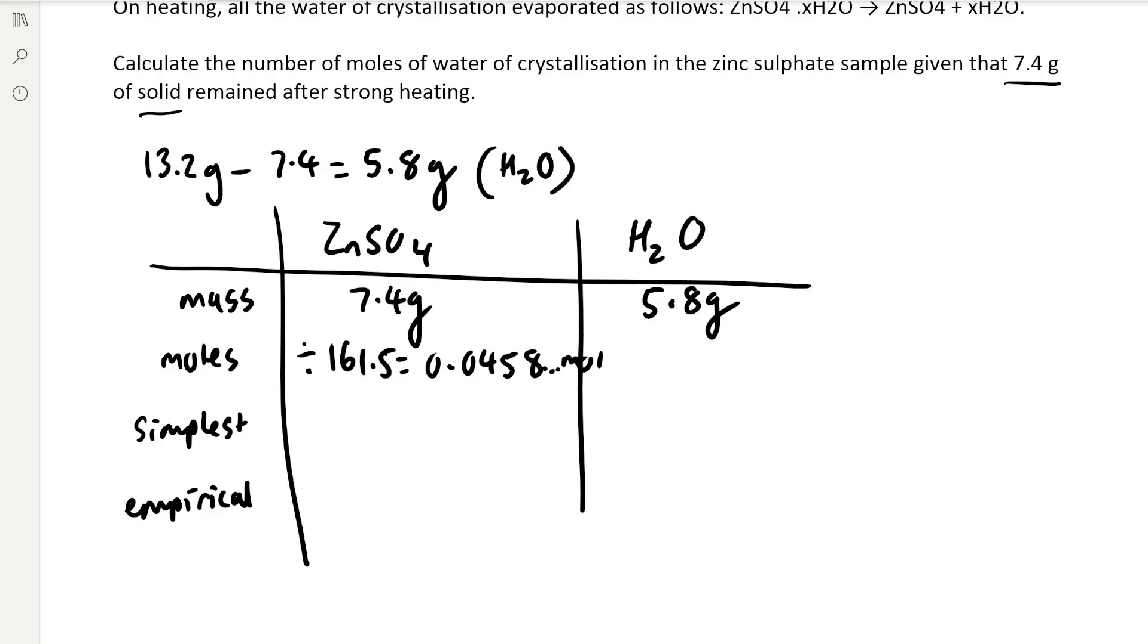We'll save that into our calculator using the recall function. Then we divide the mass of water by 18 grams per mole, which gives us 0.32 moles. We'll save that into our calculator as well.